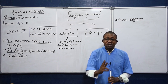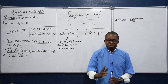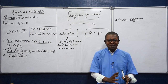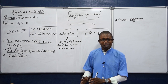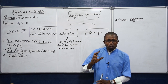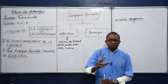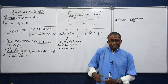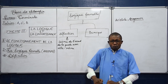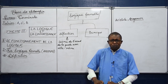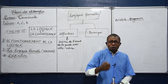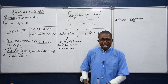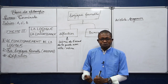Dans un raisonnement, il y a deux aspects : la forme et le contenu, l'aspect syntaxique et l'aspect sémantique. Mais lorsque nous parlons de la logique formelle, nous nous limitons au niveau de la forme, c'est-à-dire de l'harmonie ou de la cohérence entre les propositions. On ne tient pas compte de la chose dont on parle, c'est-à-dire la réalité exprimée dans le discours.